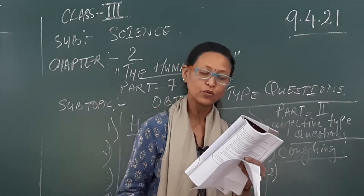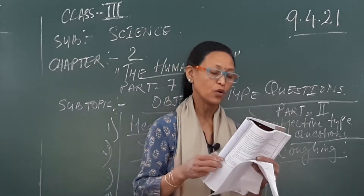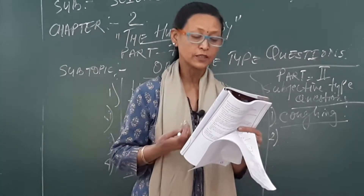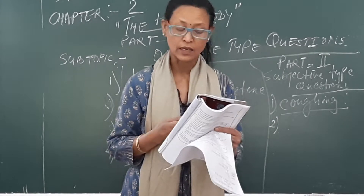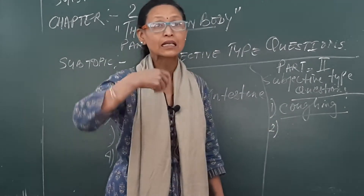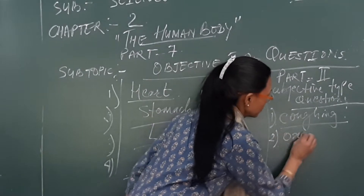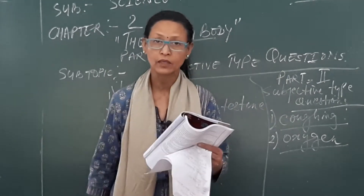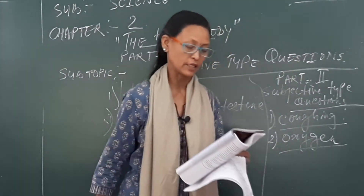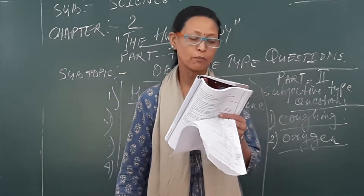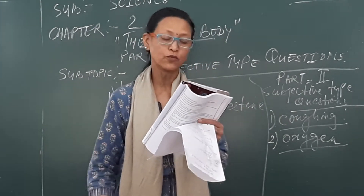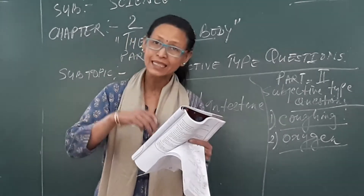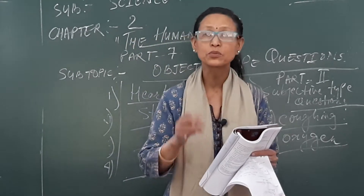Number two: a gas that our body uses to convert food into usable energy. Which gas do we take in? We take in oxygen and we breathe out carbon dioxide. So the answer is oxygen. Number three: the process of breakdown of food into simpler substances — what do you call that?